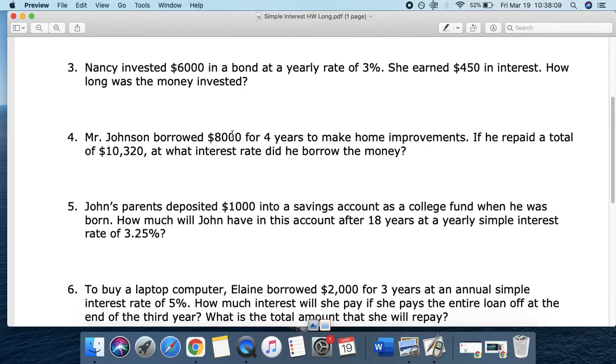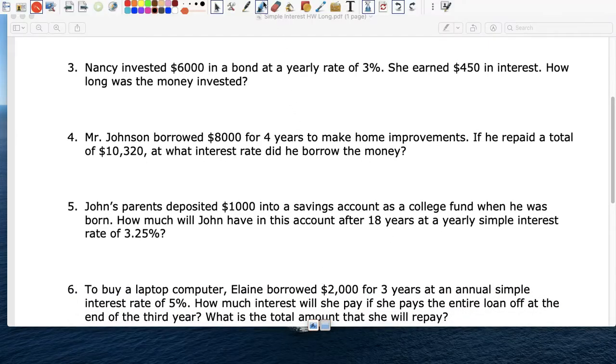Number three. So number three. Nancy invested $6,000 in a bond at a yearly rate of 3%. She earned $450 in interest. How long was the money invested? So she invested, that's my P, $6,000. 3% is my R, my rate.